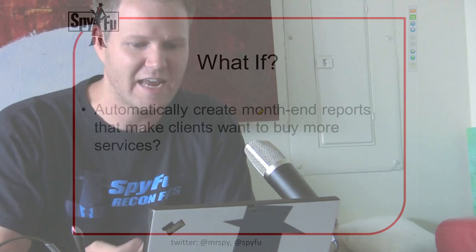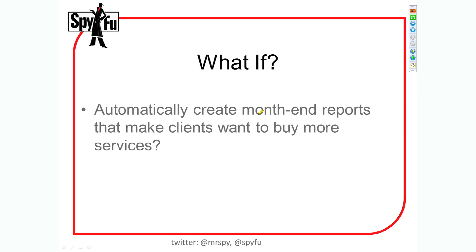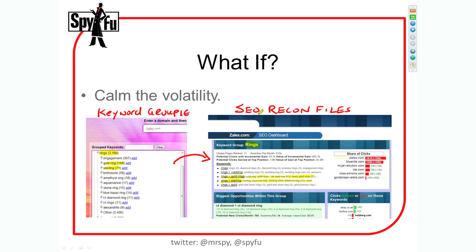What if we could automatically create month-end reports that make clients not just satisfied with the services, but want to buy more services? And what if we could calm down that volatility? Here's where Keyword Groupie really creates a lot of value — we want SEOs to be able to talk to their clients not just about a volatile single keyword, but about rings the group, which looks like it's 3,166 keywords. There's a lot less volatility in a group of keywords. If you're doing a good job as an SEO, you'll see rings as a group including engagement rings, gold rings, and sterling rings. You can go to your client and say: on rings in general, we're constantly improving, and there are 615,000 searches per month on this group. If we make a 25% incremental gain, we'll pick up 65,000 more clicks per month. That's powerful and not volatile.